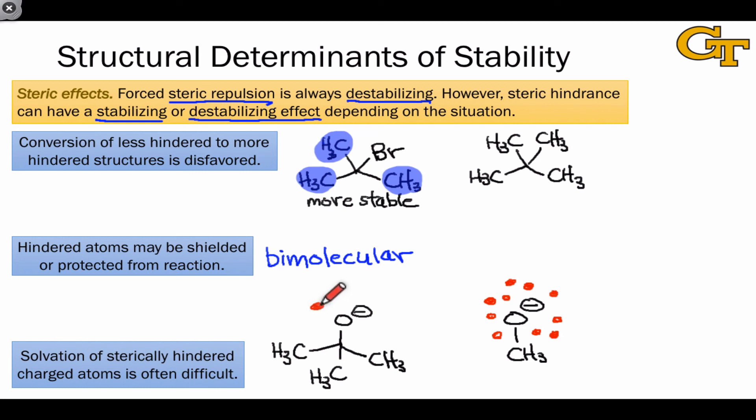And fewer get close to the alkoxide oxygen. This actually makes it easier for molecules to approach the negatively charged oxygen of tert-butoxide, making this molecule less stable due to its poor solvation.